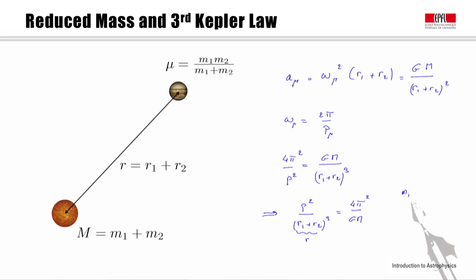In the case where the mass m1 is much larger than m2, then the total mass M is approximately m1. The center of gravity of the system will be inside m1, almost at the center of m1. We have thus that r is approximately equal to r2. We can therefore rewrite this as P squared divided by r cubed equals 4pi squared divided by GM, which is Kepler's third law.